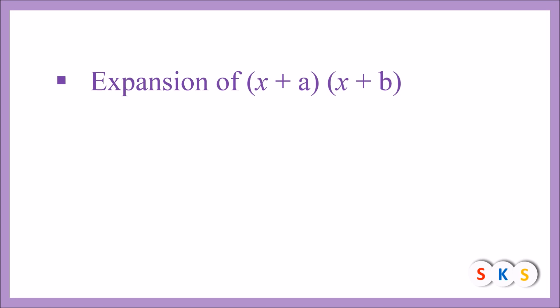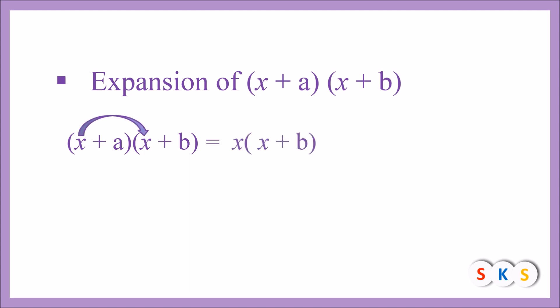First we will see the expansion of (x + a) into (x + b). It's a multiplication of two binomials whose first term is the same. You can see the first term of both binomials is x. So x + a into x + b equals: we will multiply x with the second binomial x + b, then multiply the second term a with the bracket x + b.